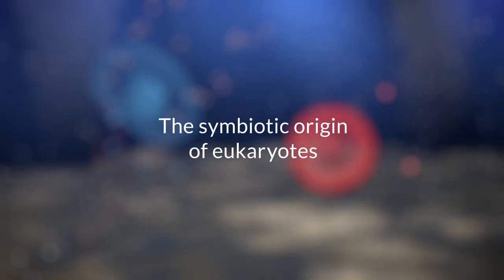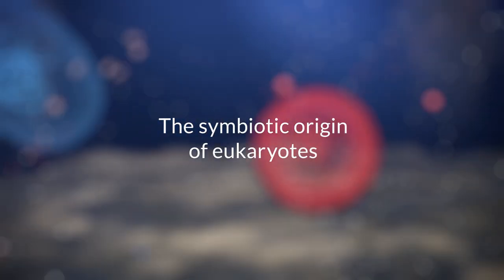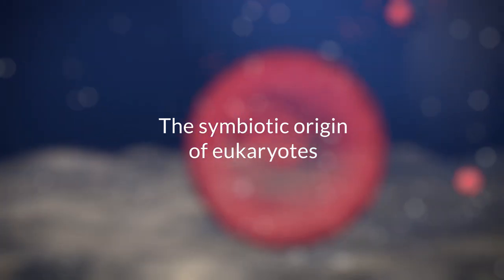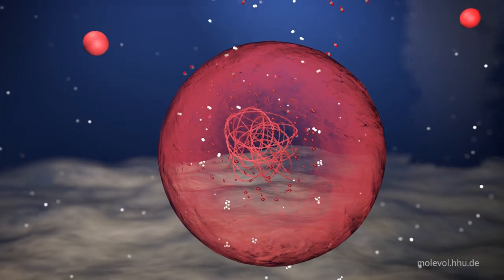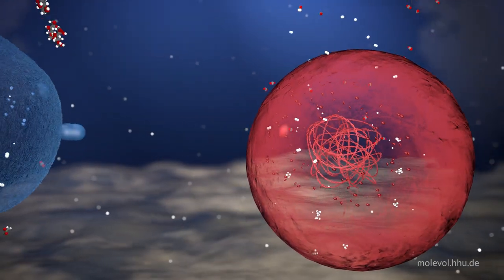This is a six-minute film about the origin of eukaryotes. Modern theories have it that eukaryotes arose from a symbiosis of two cells, an archaeal host here in red and a bacterial symbiont here in blue.